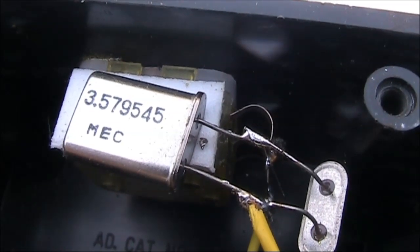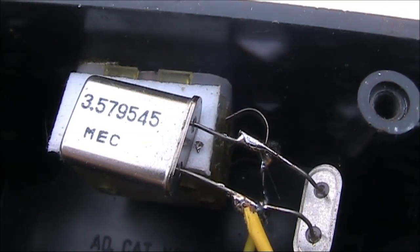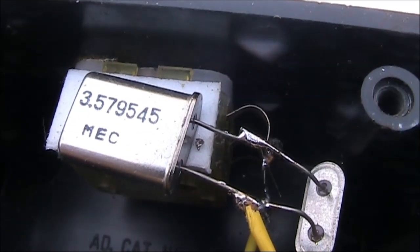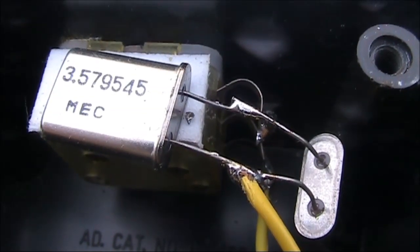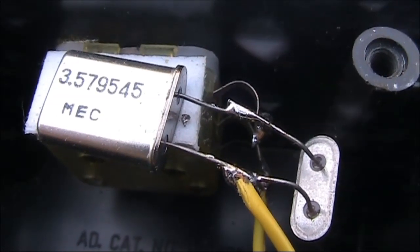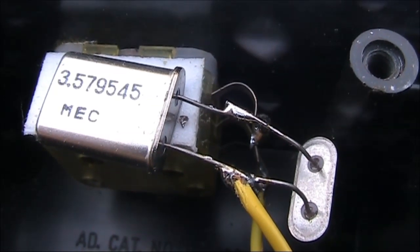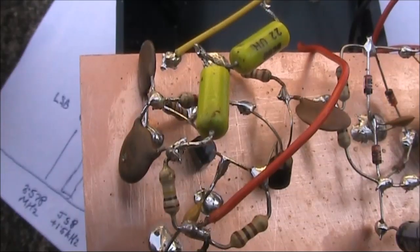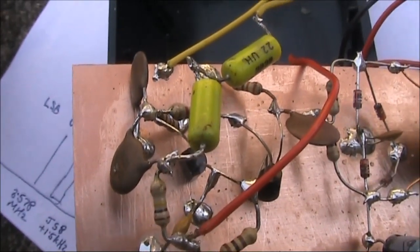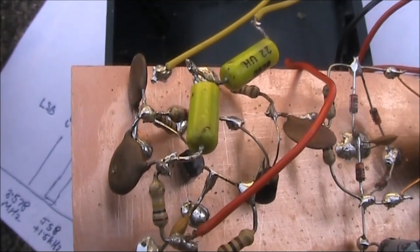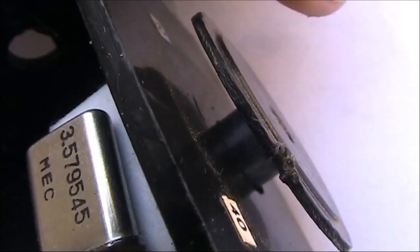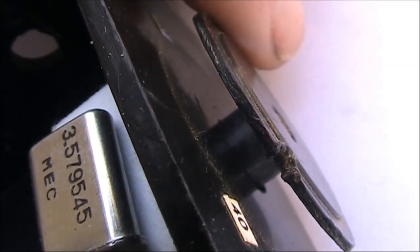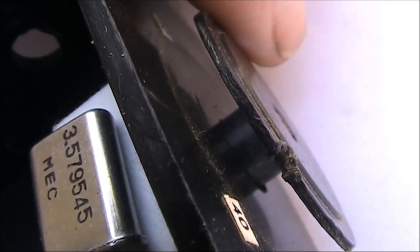3.5795 is just 1.5 kilohertz above the 3.578 we need to be on. To pull the crystal down the required 1.5 kilohertz, I've made a crystal oscillator with two crystals in parallel, a variable capacitor and two RF chokes. That allows me to shift the frequency down the required 1.5 kilohertz. Plus, the variable capacitor allows a small amount of frequency movement to get it exactly on frequency.